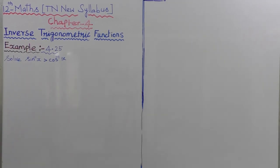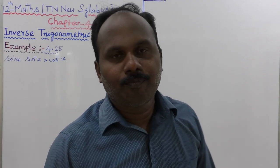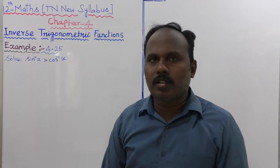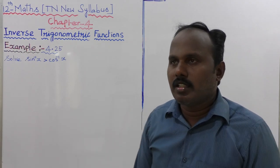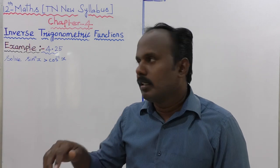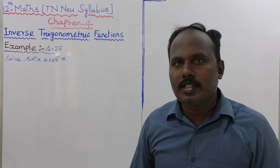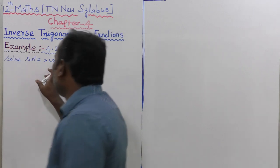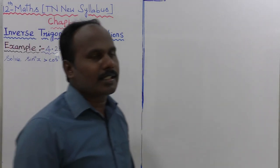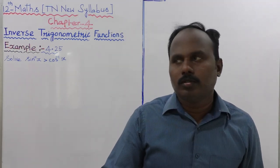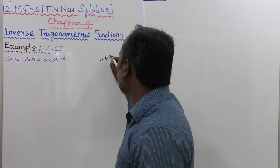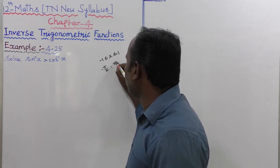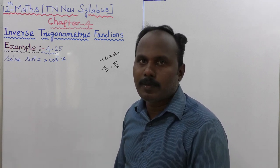Example 4.25: solve sin⁻¹(x) > cos⁻¹(x) — find the interval. For sin⁻¹(x), the principal value range requires -1 ≤ x ≤ 1. For cos⁻¹(x), the range is 0 ≤ x ≤ π. Both functions are satisfied when -1 ≤ x ≤ 1. The principal range of sin⁻¹ is [-π/2, +π/2], so x must satisfy that condition.